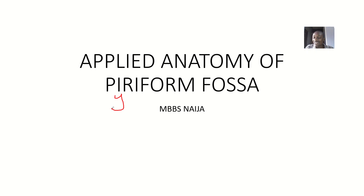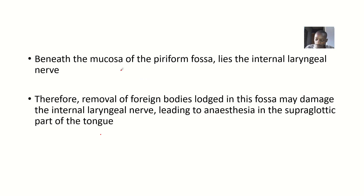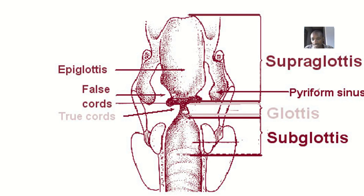Looking at this structure here, this narrow place is what we call the piriform fossa, or piriform sinus, or smuggler's fossa. The piriform sinus is actually like a pit inside your throat.